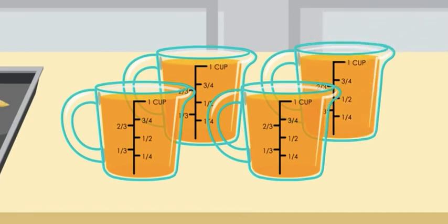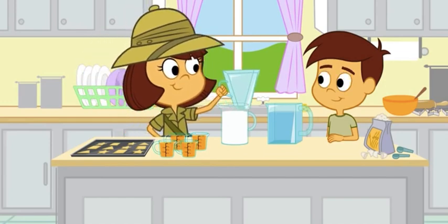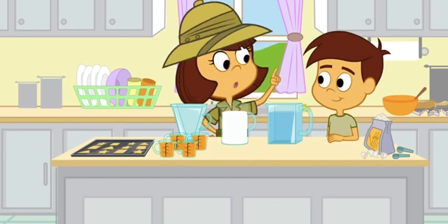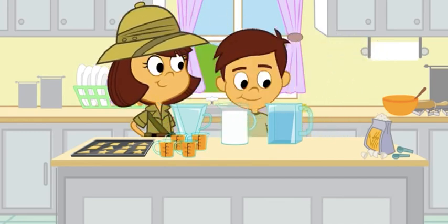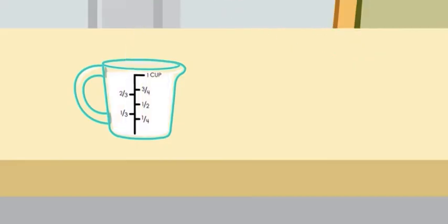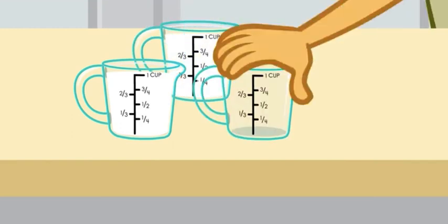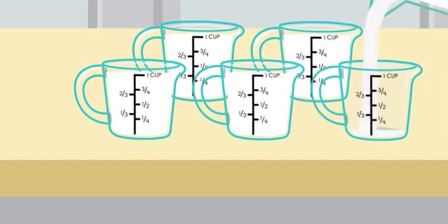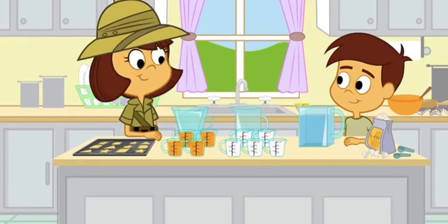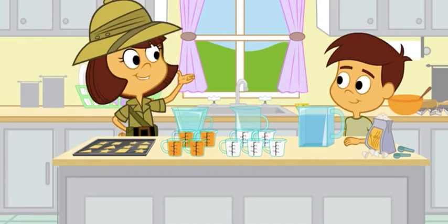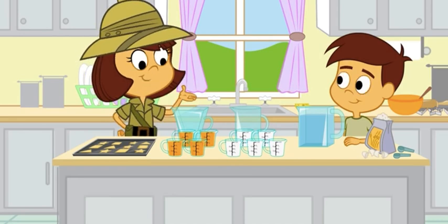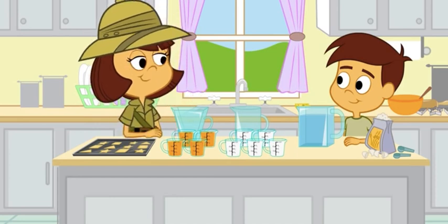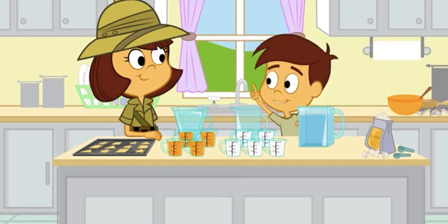We measured four cups, so this pitcher had four cups of juice in it. This pitcher has a cylinder shape — how much milk do you think it holds? One cup, two cups, three cups, four cups, five cups. Let's compare: there are four cups in front of the pyramid pitcher and five cups in front of the cylinder shaped pitcher. The cylinder has more liquid!